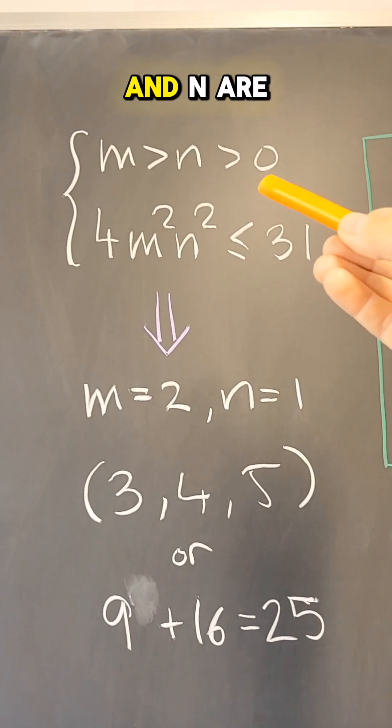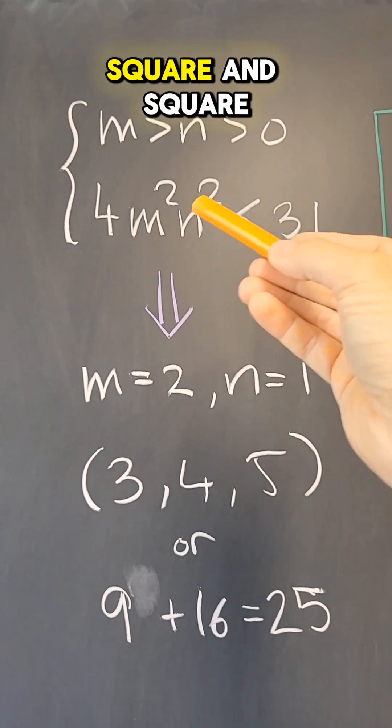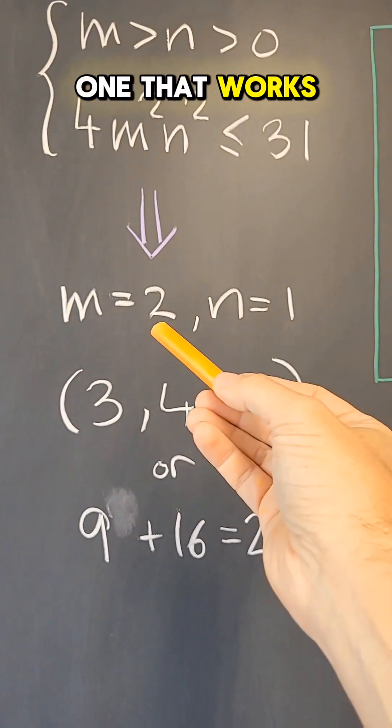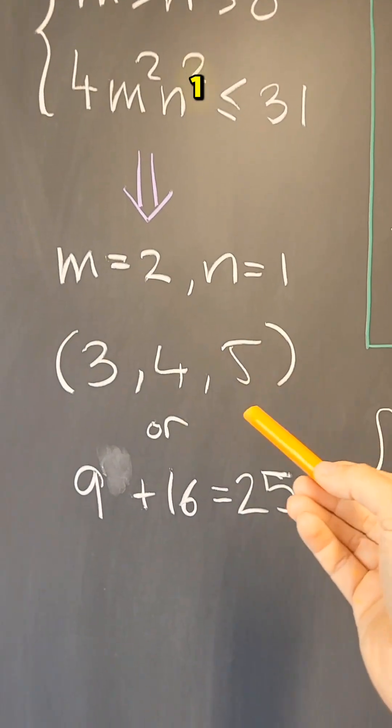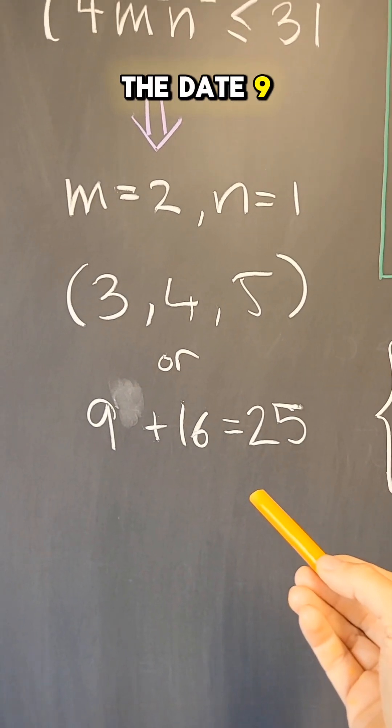But if m and n are bigger than 0, and m is bigger than n, and 4m squared n squared is less or equal to 31, there is only one that works: m equals 2, and n equals 1, which gives rise to 3, 4, 5, which is the date 9, 16, 25.